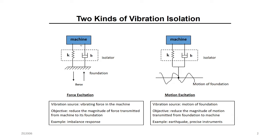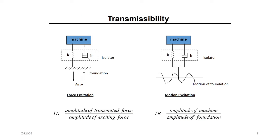Let's focus on the first one: force coming from the machine. An unbalanced force coming from the machine going to the floor — we want to design an isolator, a spring and damper. So we want to focus on the transfer function, which is similar to what we call transmissibility. Transmissibility is like the transfer function. For force excitation, the exciting force is your input coming from the machine — the forcing function — and the output is the transmitted force going to the floor. The ratio of output amplitude to input amplitude is the transmissibility.